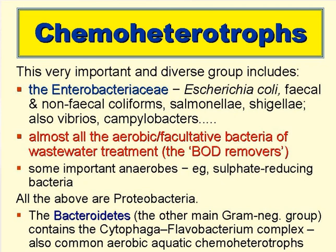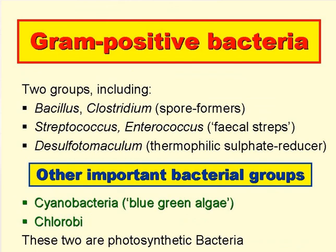The chemoheterotrophs are a very important and diverse group, including the family Enterobacteriaceae. This is a hugely important family as it contains E. coli, faecal and non-faecal coliforms, Salmonella, Shigella, Vibrios, and Campylobacters. Almost all the aerobic and facultative bacteria in wastewater treatment — the BOD removers — are chemoheterotrophs, as are some important anaerobes, for example many of the sulphate-reducing bacteria. The other main gram-negative group, the Bacteroidetes, contains the Cytophaga-Flavobacterium complex, and these are also common aquatic chemoheterotrophs.